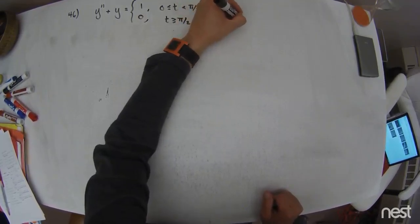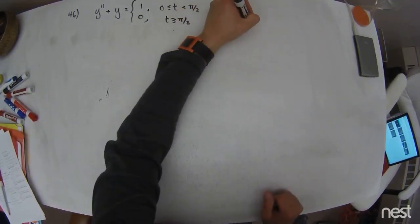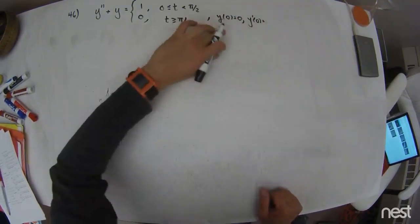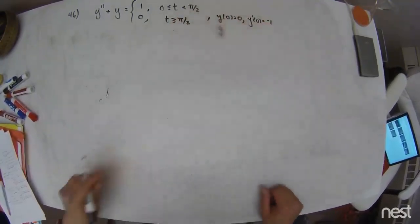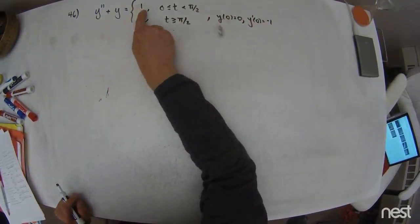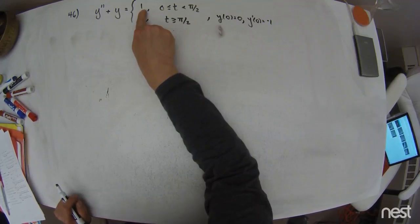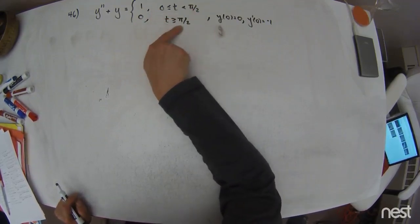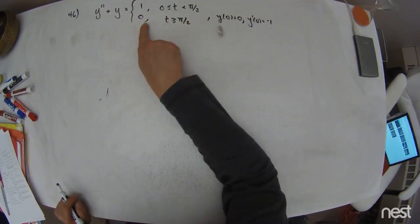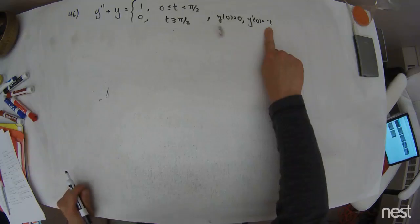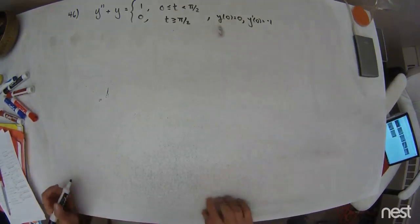y of 0 is equal to 0, and y prime of 0 is equal to, I think, negative 1. So this thing's, okay, so it's a mass spring system. There's no damping, right? At the start of time, there's a force consistent with it being a mass that would induce 1 newton of force, and that's going to hang out for the first pi over 2 seconds. After pi over 2, I'm going to take that mass off. And this thing's initially moving one distance per time in the upward direction.